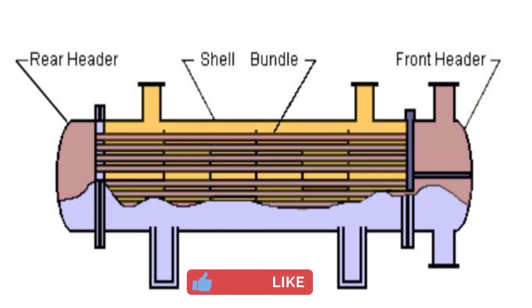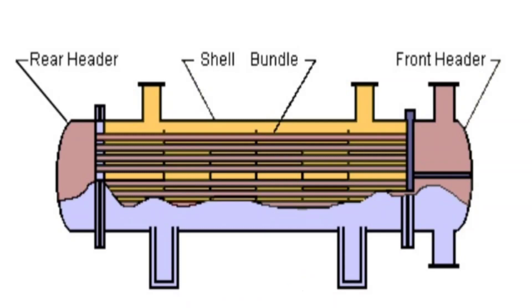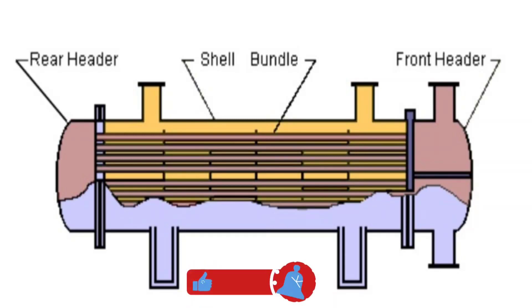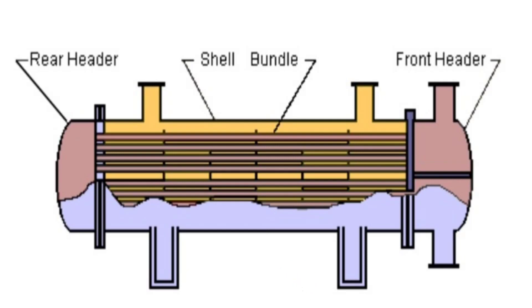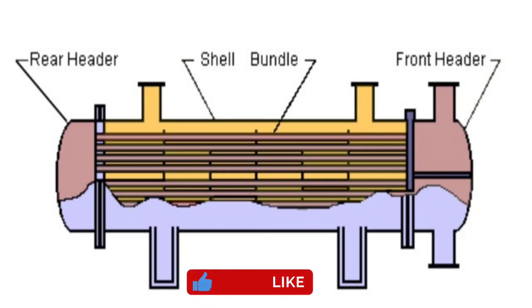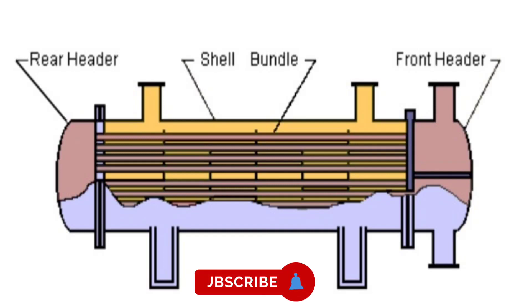The rear end is also where the fluid is returned to the front header in exchangers with multiple tube-side passes. The tube bundle comprises the tubes, tube sheets, baffles, and tie rods to hold the bundle together. The shell contains the tube bundle.